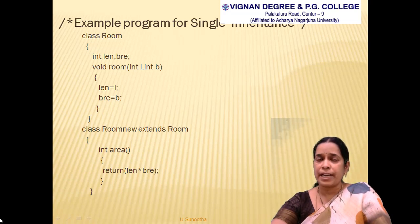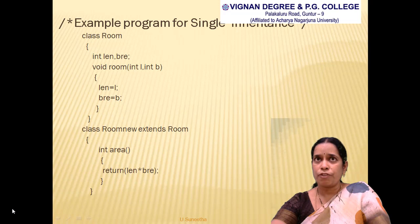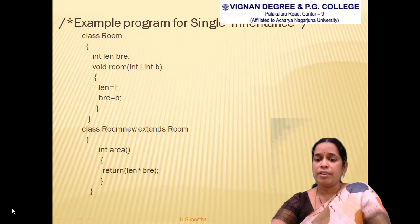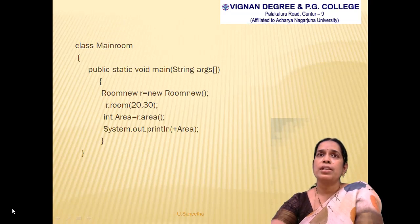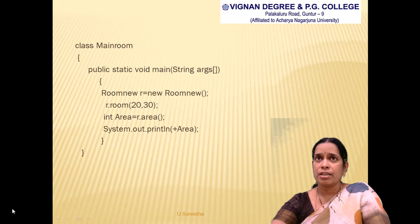The second class is the subclass named 'RoomNew'. Its header is written as: class RoomNew extends Room. Since it extends Room, all properties of Room are inherited into RoomNew. RoomNew has its own method 'int area', within which the values of 'len' and 'bre' are multiplied. Then the method and class are closed.